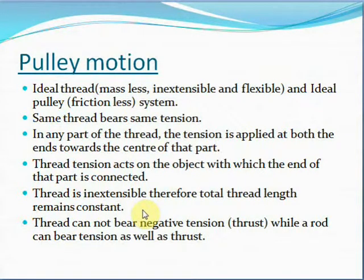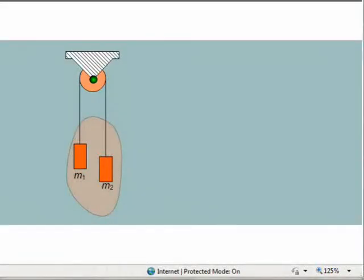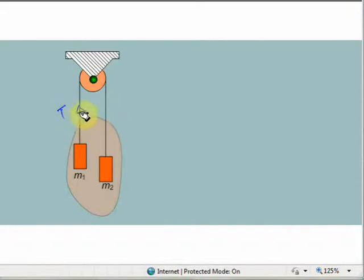Let's go through the assumptions and facts about the pulley system. The thread used is an ideal thread — it is massless, inextensible, and flexible. Also, the ideal pulley system is a frictionless system. The same thread bears the same tension throughout. For example, if there is one thread in the system, the tension throughout that thread will be equal to T — so tension at any point along the thread remains the same value T.